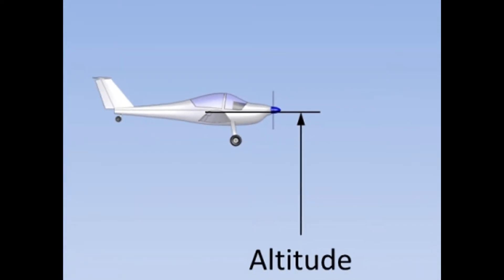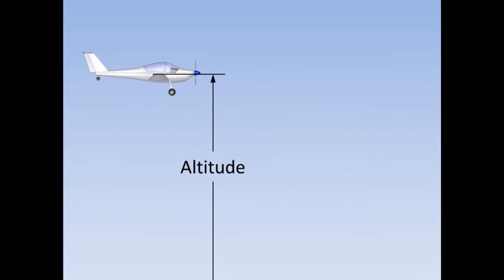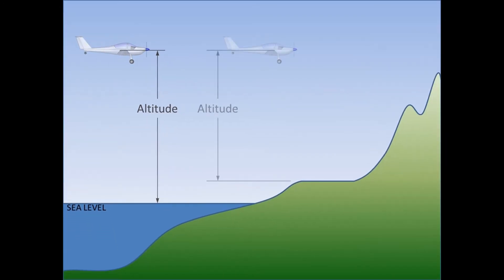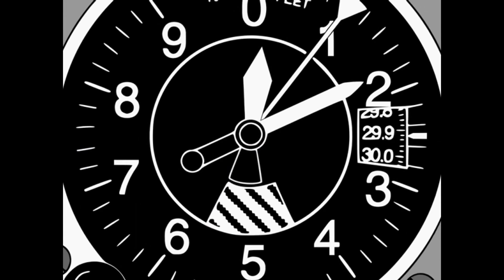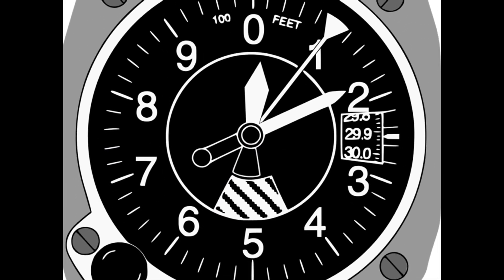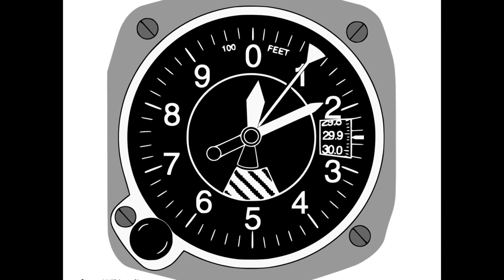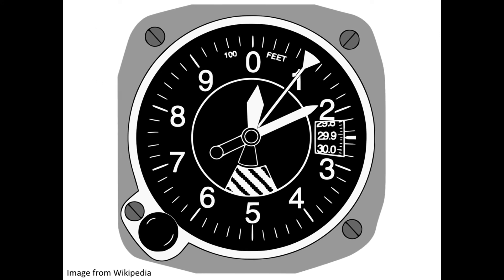In aviation, the term altitude refers to the vertical distance between an object or a point and some reference, such as sea level or ground level. In aircraft, the altitude is read using the altimeter. The altitude is most often presented using units of feet, although metric altimeters also exist. This altimeter displays the altitude in units of feet.